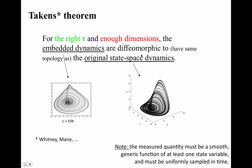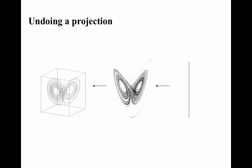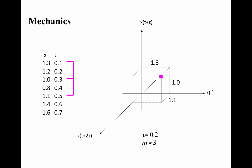Now you remember the goal of this procedure. The goal is to undo a projection. The procedure itself, we covered in the previous section, you plot delayed versions of the measured quantity against itself.